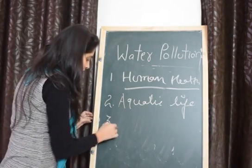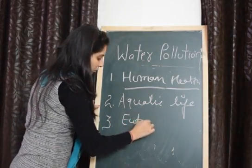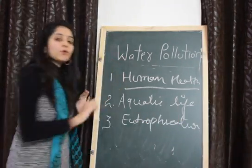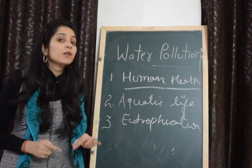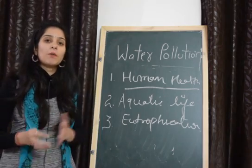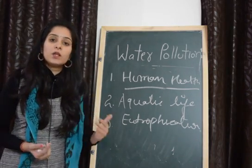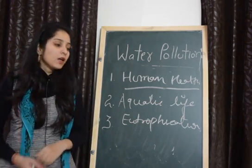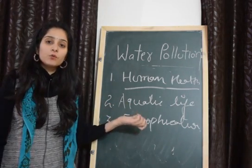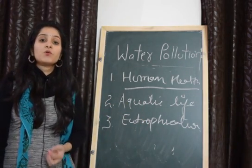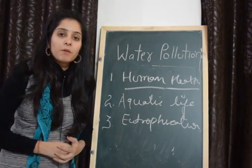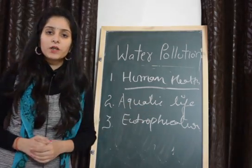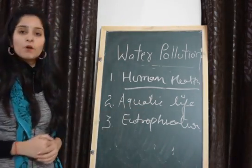Third, eutrophication occurs. Eutrophication means sometimes there are some nutrient-rich lakes present, but due to the presence of some algae, there is a reduced level of oxygen. Due to this decreased level of oxygen, some useful microorganisms and some useful phytoplanktons are killed. That particular process is called eutrophication, and it also occurs due to water pollution.